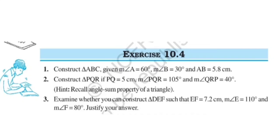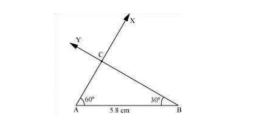Now see Exercise 10.4, Question 1: Construct triangle ABC given angle A equal to 60 degrees, angle B equal to 30 degrees, and AB equal to 5.8 centimeters. See the steps: first draw a line segment AB of length 5.8 centimeters. At point A, draw a ray AX making a 60 degree angle with AB. At point B, draw a ray BY making a 30 degree angle with AB. Point C lies on both rays AX and BY, so this is the required triangle ABC.